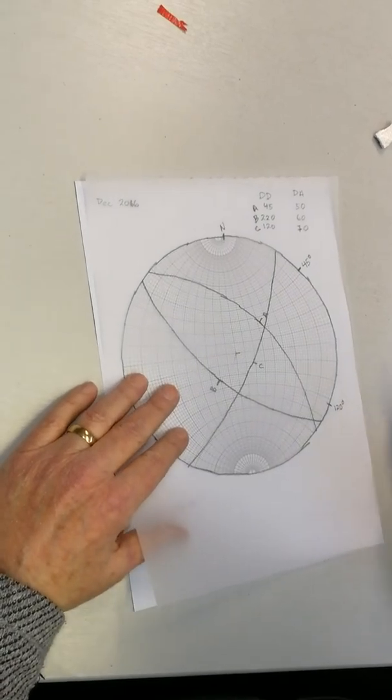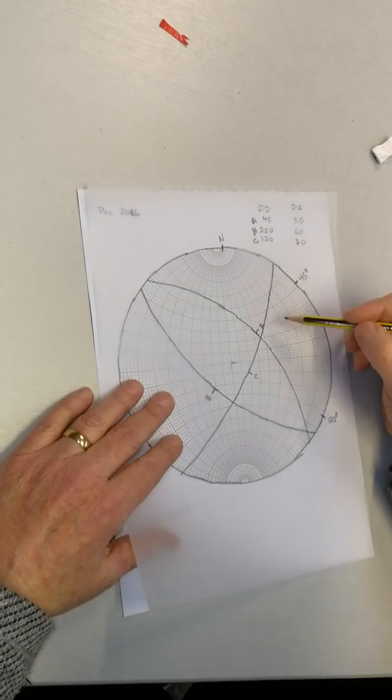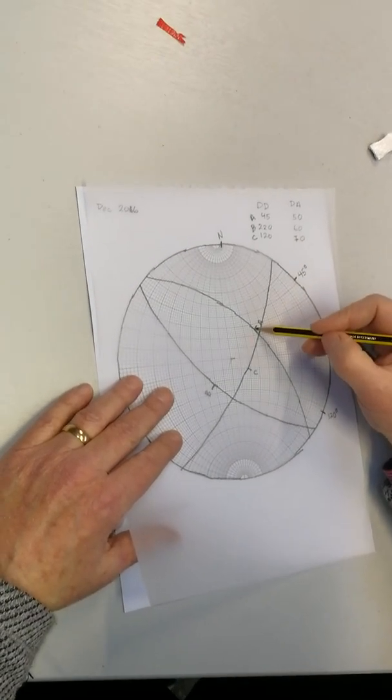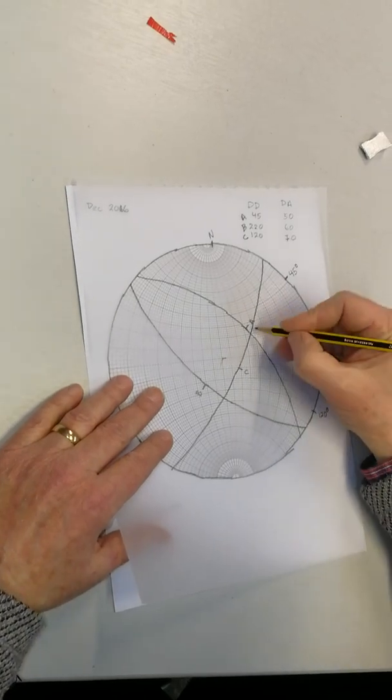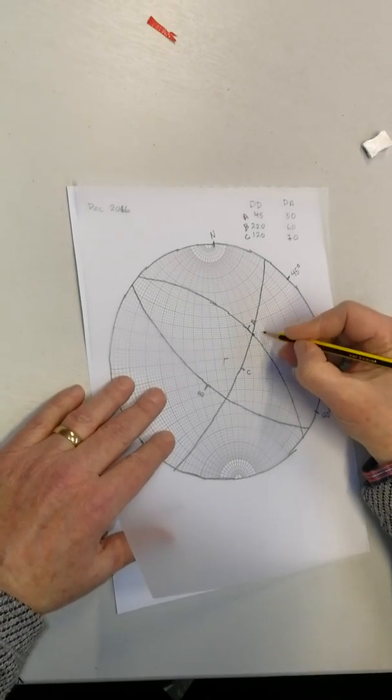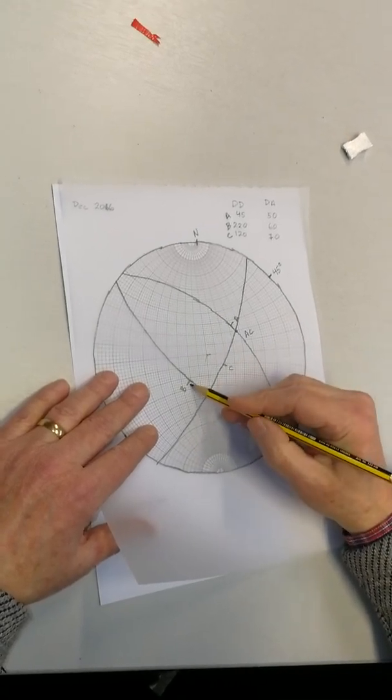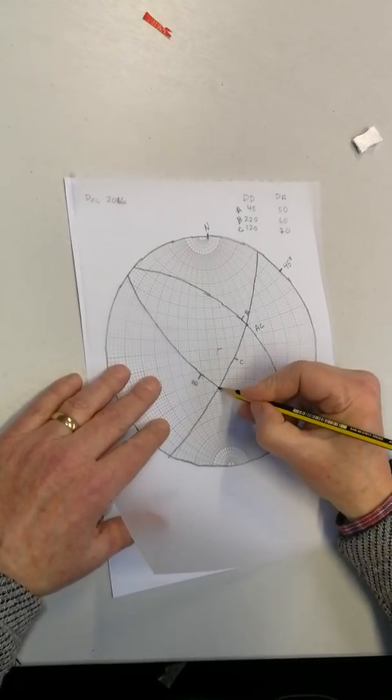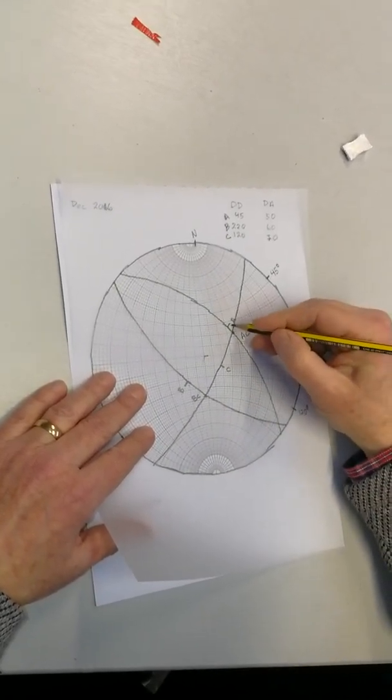Now, normally what you would want to do is you would want to find the trend and the plunge of the intersections. So where plane A intersects with plane C, that is intersection AC. Where B intersects with C, that is BC. And where A intersects with B is AB.